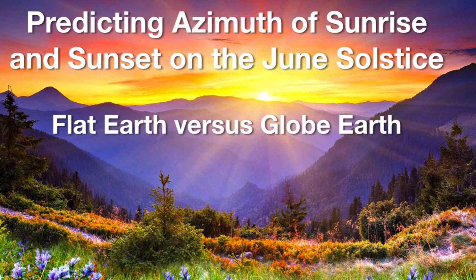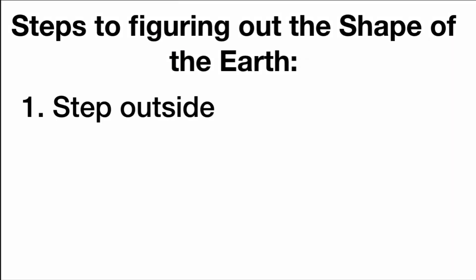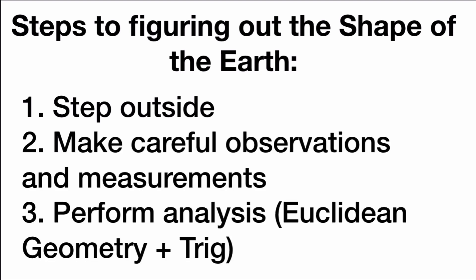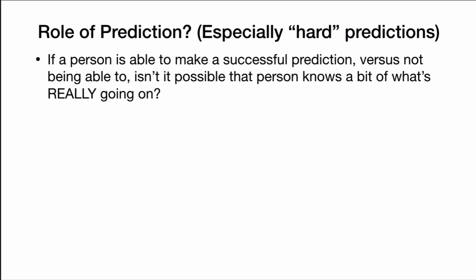Predicting azimuth of sunrise and sunset on the June solstice — flat Earth versus globe Earth. There are a couple of steps to figuring out the shape of the Earth: step outside, make careful observations and measurements, then perform an analysis using Euclidean geometry plus a little bit of trig. I want to say a few words about prediction — especially making a hard prediction. If somebody is able to make a successful prediction versus somebody else not being able to, isn't it possible that the person who succeeded knows a bit more about what's really going on?